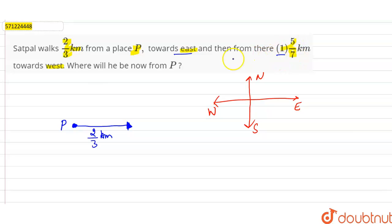...he moved 1 and 5/7 kilometers towards west. So from here, west is this direction. So from here he moved 1 and 5/7 kilometers towards west.